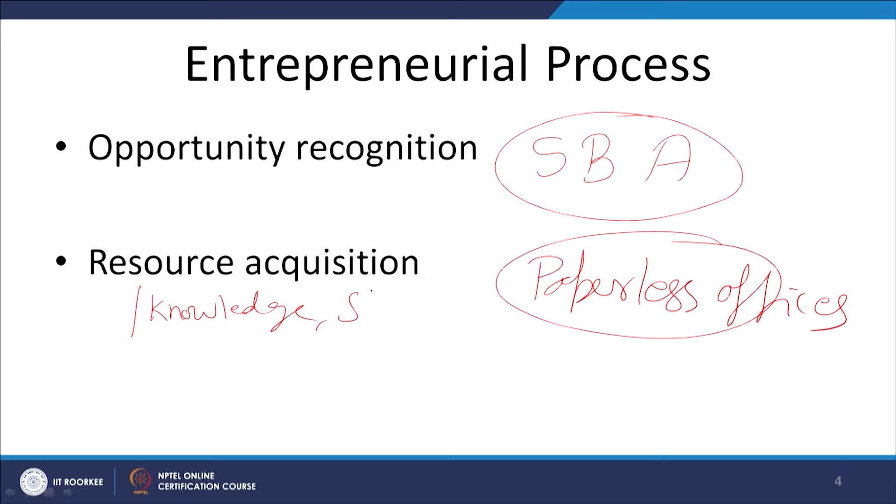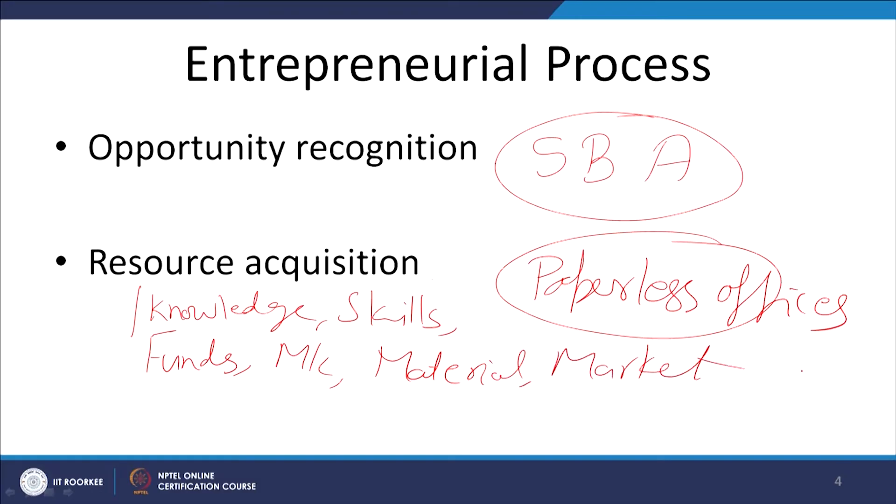The idea management system, discussed in an initial session, helps an entrepreneur in opportunity recognition. Once you recognize the opportunity and find a possible business opportunity, the second important element is resource acquisition — with respect to knowledge, skills, funds, machines, materials, and market. You need to procure those resources so that you can create value and market your idea.